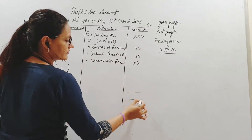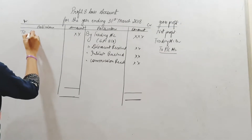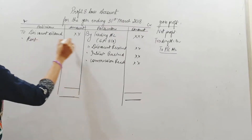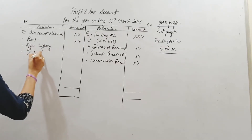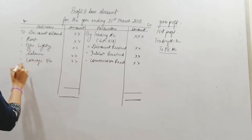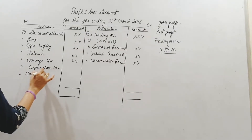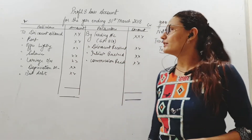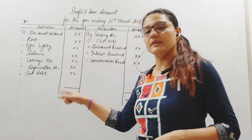From the total of gross profit plus all other incomes, we subtract expenses. For example: discount allowed, rent paid, office-related expenses like office lighting, salaries, carriage on goods sold — meaning carriage outward — depreciation, and bad debts. These are all indirect expenses that we did not take into account while calculating gross profit. So this total income minus all these indirect expenses gives us the balancing figure.